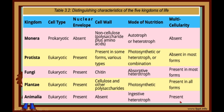Students, in this video we learned about the Five Kingdom System of Classification, which was proposed by R.H. Whittaker. This system avoids confusion. Thank you.